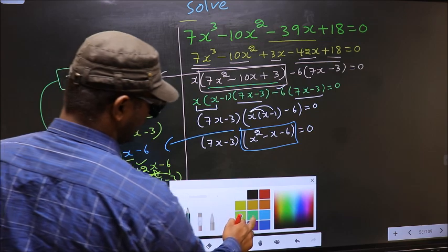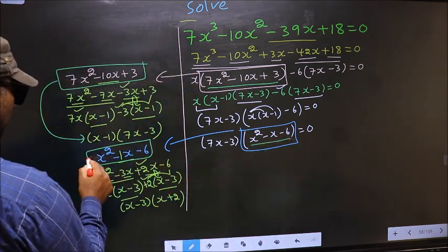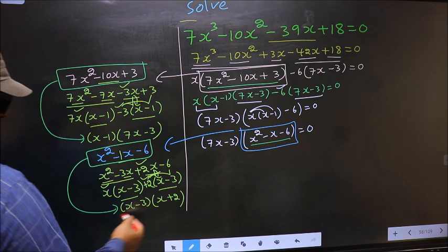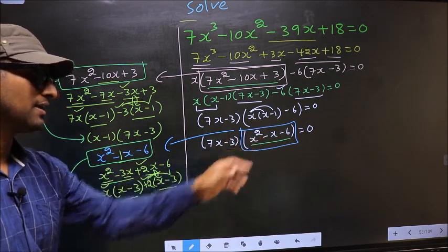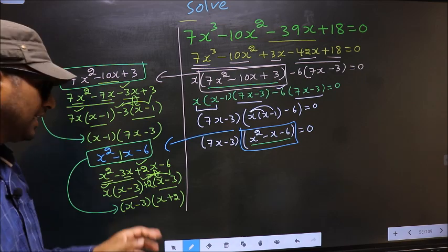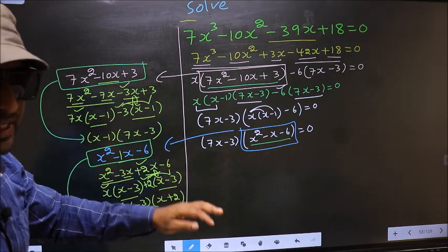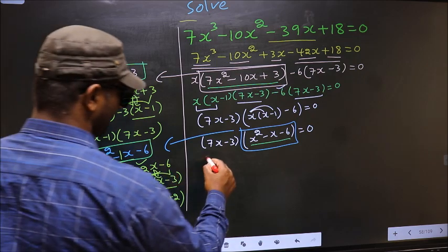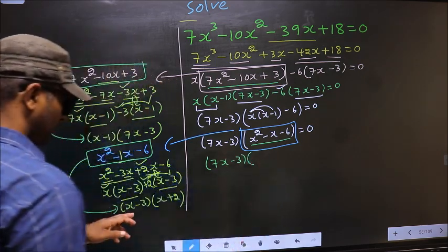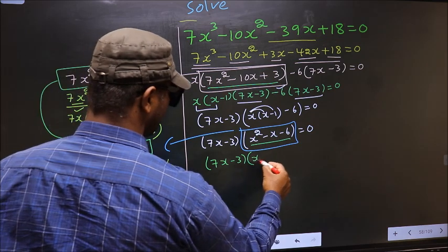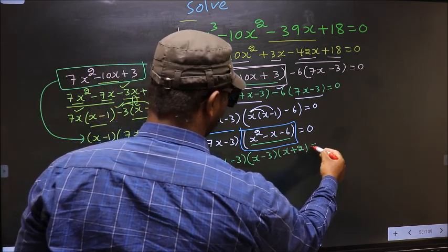In place of this quadratic, we now write (x - 3)(x + 2). So the equation becomes (7x - 3)(x - 3)(x + 2) = 0.